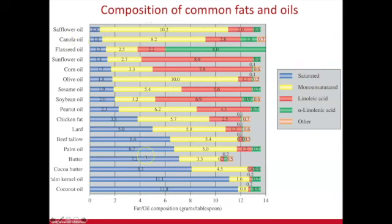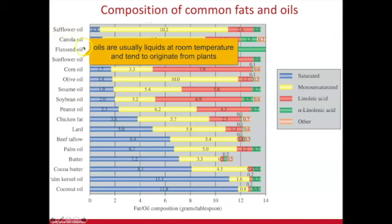If you're thinking about what fats you should be eating to get healthy fats and which ones to avoid, you'll want to avoid saturated fats. On the y-axis, towards the top, these tend to be plant-based origins — vegetables, nuts, and seeds — such as safflower, canola, flaxseed, sunflower, corn oil, and olive oil.